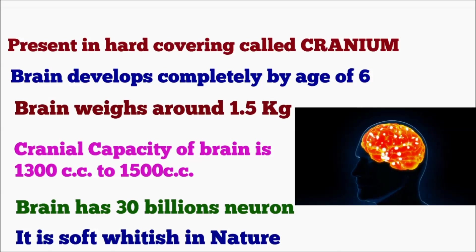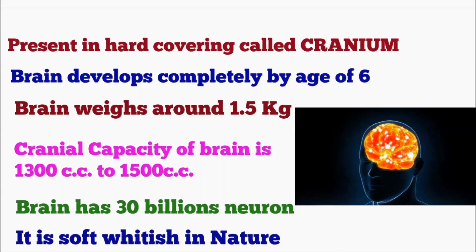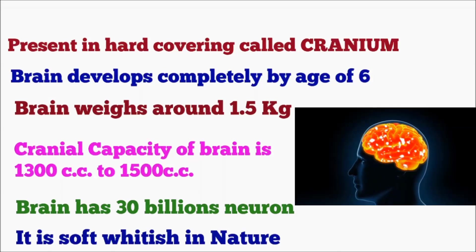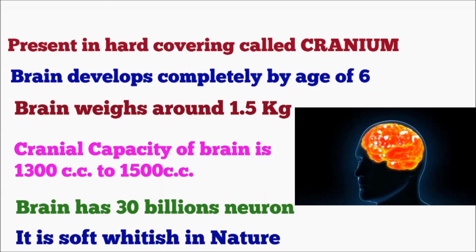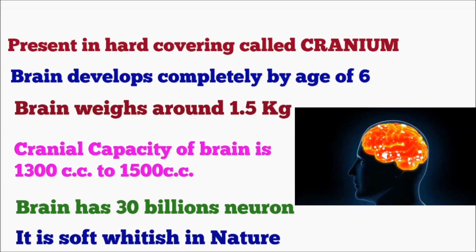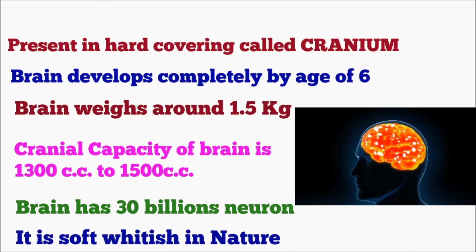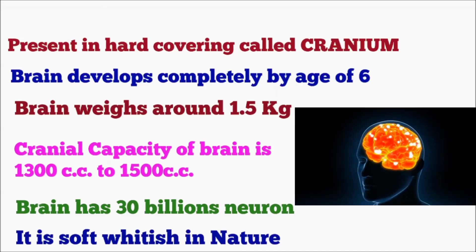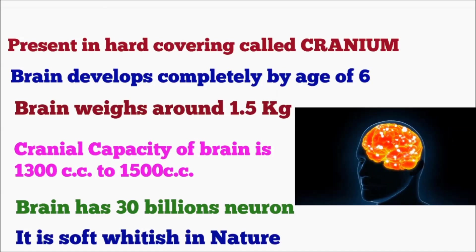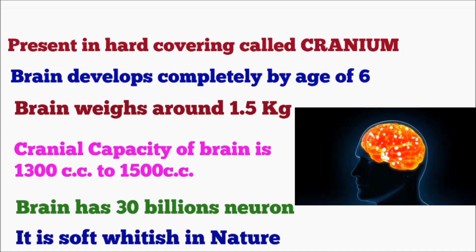First we need to understand that the brain is present in a hard covering called the cranium. It completely develops by the age of six. Brain weighs around 1.5 kg, the cranial capacity is around 1300 to 1500 cc, and the brain has 30 billion neurons.